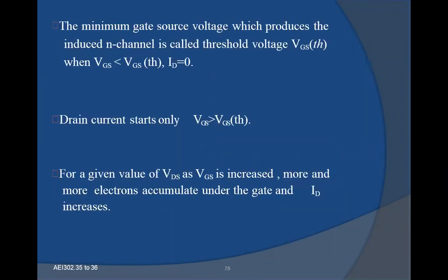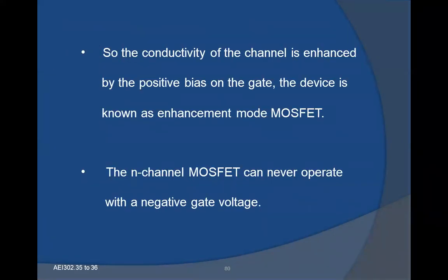The minimum gate-source voltage which produces the induced N-channel is called the threshold voltage. At threshold voltage, the drain current ID becomes zero. Drain current starts only when VGS is greater than the threshold voltage. For a given value of VDS, as VGS is increased, more and more electrons accumulate under the gate and ID current increases. The conductivity of the channel is enhanced by the positive bias on the gate, so the device is known as the enhancement mode MOSFET. The N-channel MOSFET can never operate with a negative gate voltage.